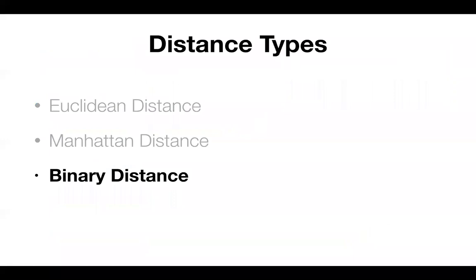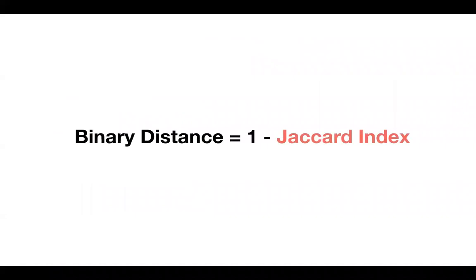Another type is binary distance, which is sometimes more convenient. Binary distance is really 1 minus the Jaccard index. The name sounds scary but it's actually pretty simple when you think about it.